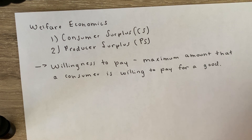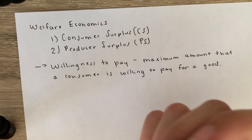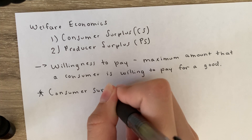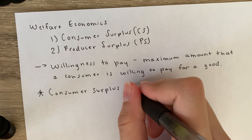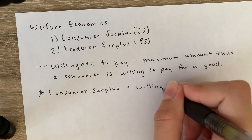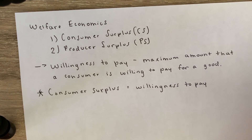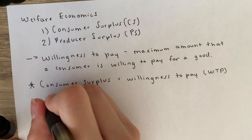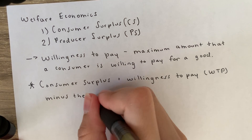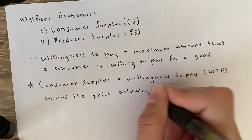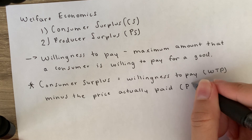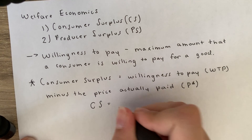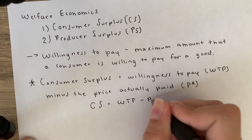This helps us define consumer surplus. Consumer surplus is equal to the willingness to pay — often abbreviated as WTP — minus the price that was actually paid, which is the market price P star. So we can write: consumer surplus equals WTP minus P star.